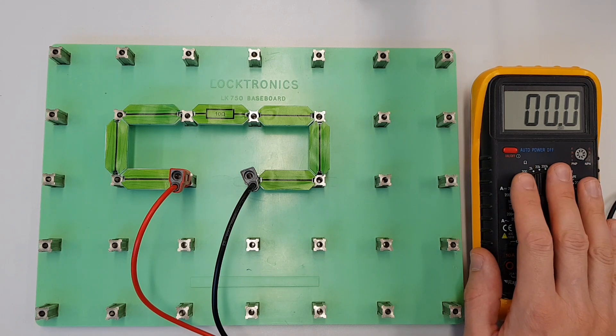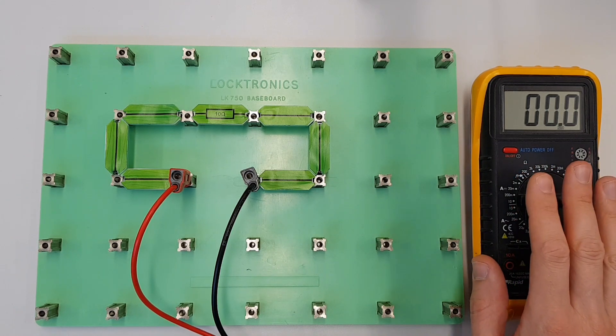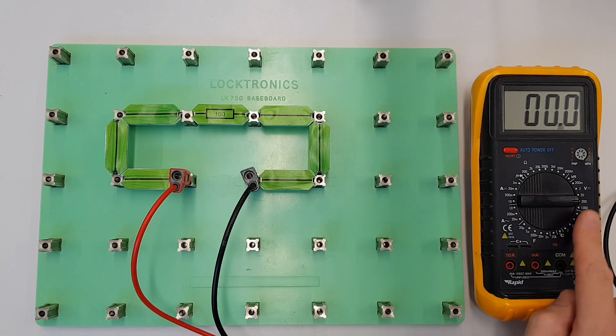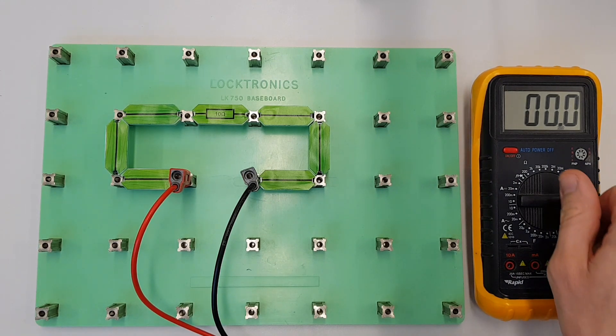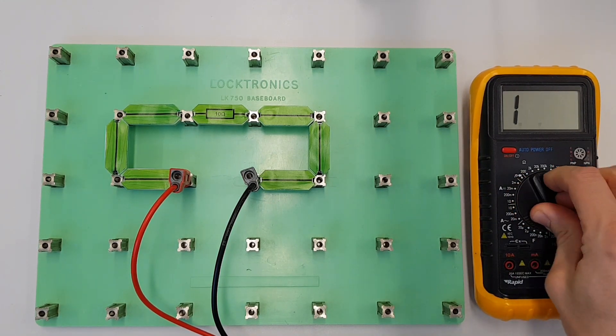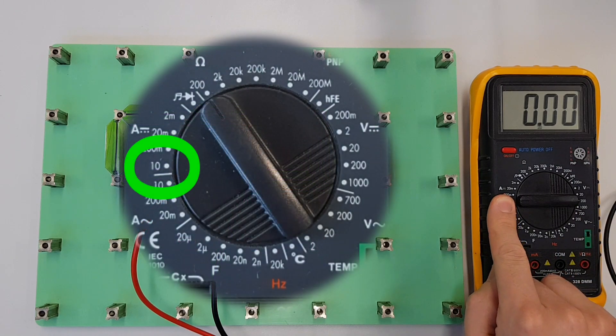So in order to measure how much current we've got flowing around the circuit we now need to connect our multimeter in. Now it's currently set to measure DC voltage but what I'm going to do now is spin this around and set it to measure DC current. So this is now measuring DC current.